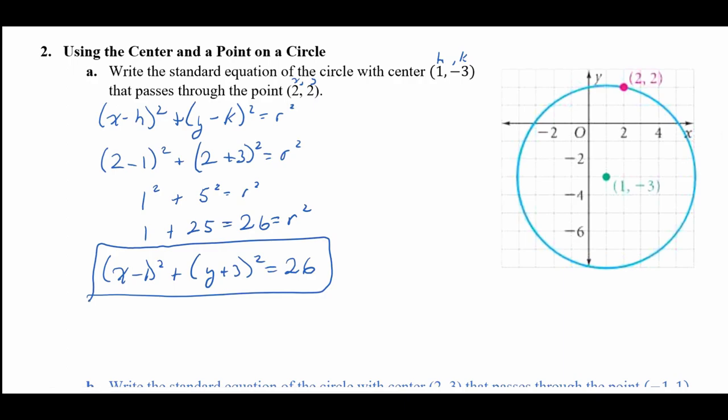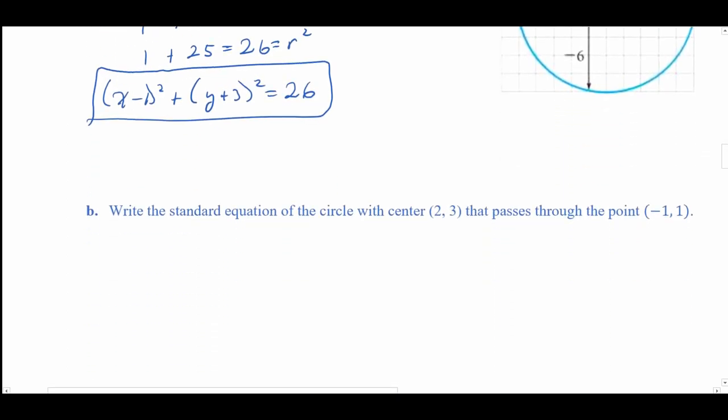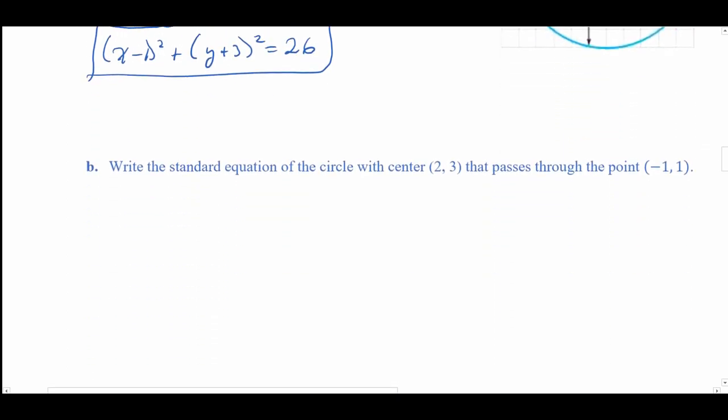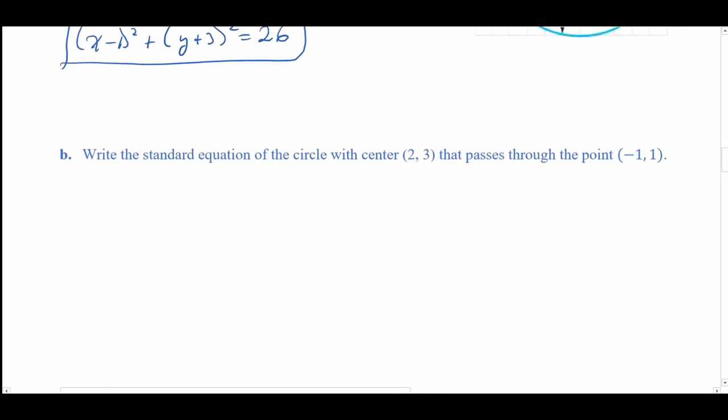Now here's one for you to do on your own. Write the standard equation of the circle with center (2, 3) that passes through the point (−1, 1). Give this one a shot and see what you get.